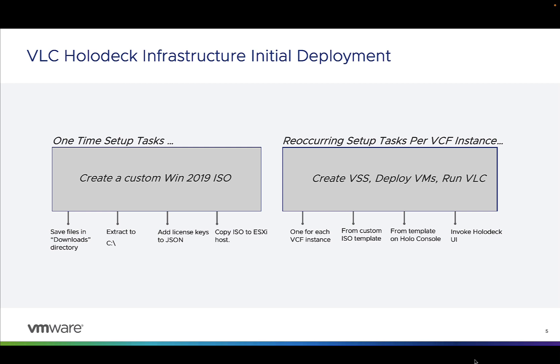What do we use this ISO for? This is essentially a self-contained Windows ISO that you're going to use to deploy what we call the console, or the hollow console. This hollow console has everything you need to run the VCF nested labs — all the VLC software, all the JSON configuration files, and all the dependent packages like VMware Tools and PowerCLI.